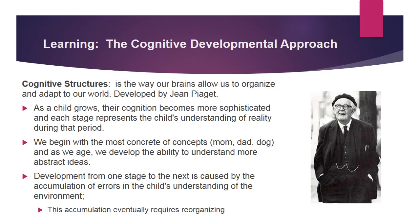Finally, we're going to talk about the cognitive developmental approach. This involves cognitive structures — the way our brains allow us to organize and adapt to our world — and was developed by Jean Piaget. As a child grows, their cognition becomes more sophisticated; each stage represents the child's understanding of reality during that period. We begin with the most concrete concepts — mom, dad, dog, cat — and as we age, we develop the ability to understand more abstract ideas. Development from one stage to the next is caused by the accumulation of errors in the child's understanding of their environment, which eventually requires reorganizing.